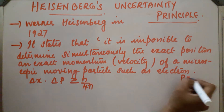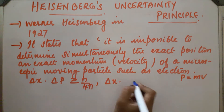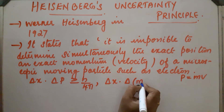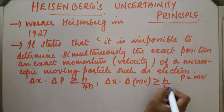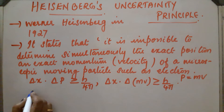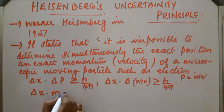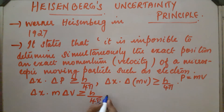Since P is equal to MV, we can write Delta X into Delta MV, greater than or equal to h by 4 pi. The mass of the electron is a constant value — it will not change — so we can write Delta X into M Delta V, greater than or equal to h by 4 pi. This is the mathematical expression.